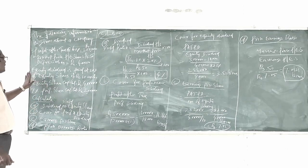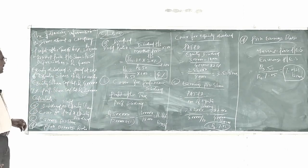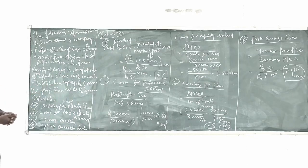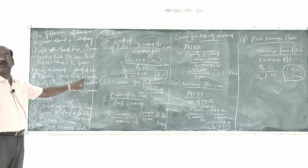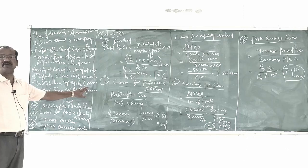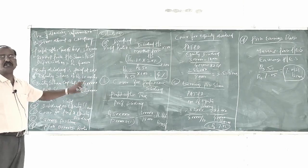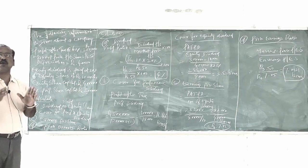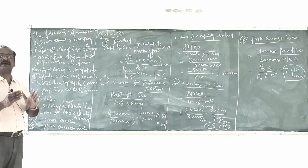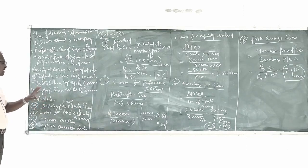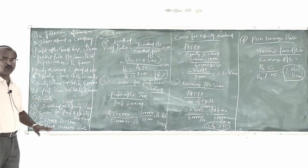20% on equity shares of Rs. 10 each. Equity share capital is amounted 4 lakhs. The book value of every equity share is Rs. 10, and the total amount of equity capital is Rs. 4 lakhs. Therefore, Rs. 4 lakhs divided by Rs. 10 will give you 40,000 shares the company has issued. 9% preference share capital is amounted 2 lakhs.